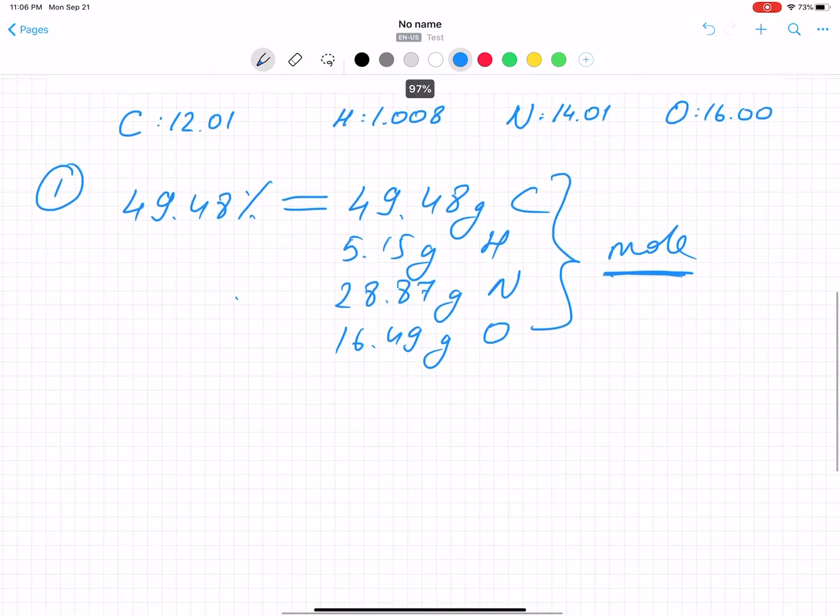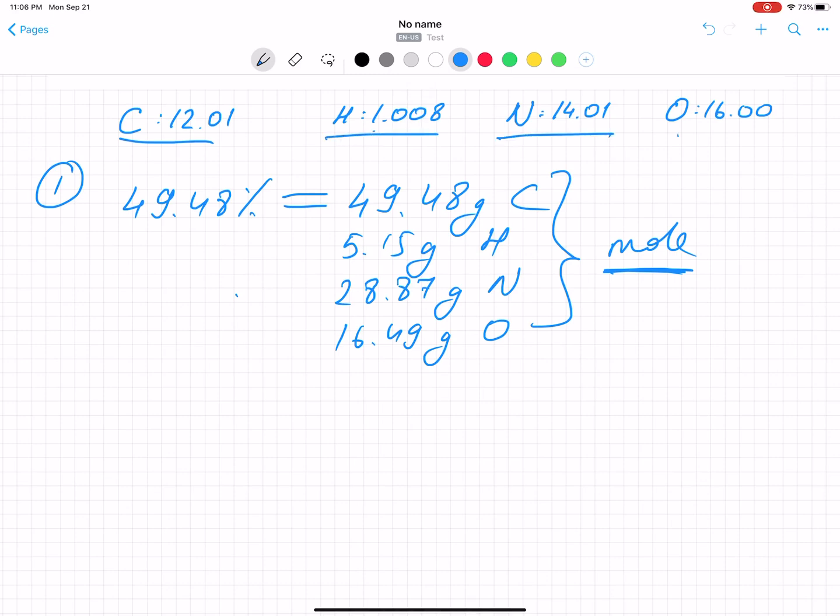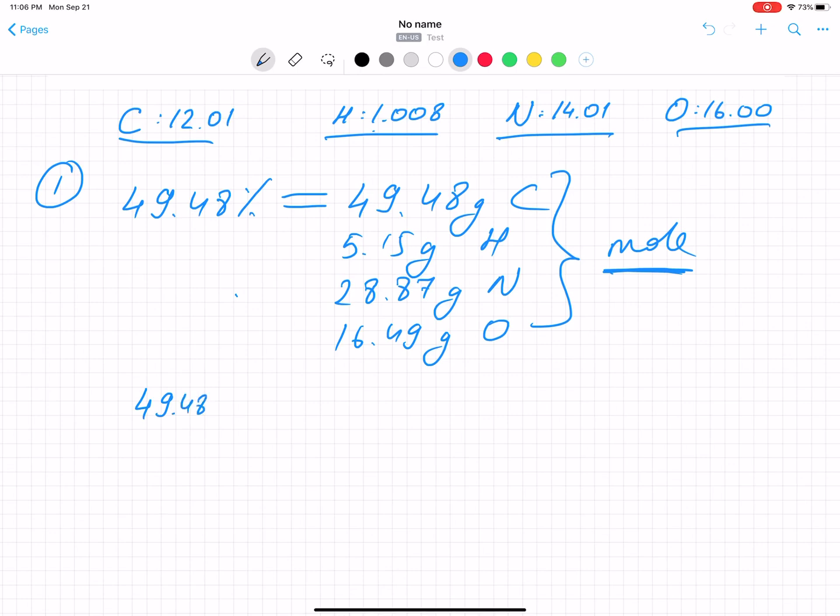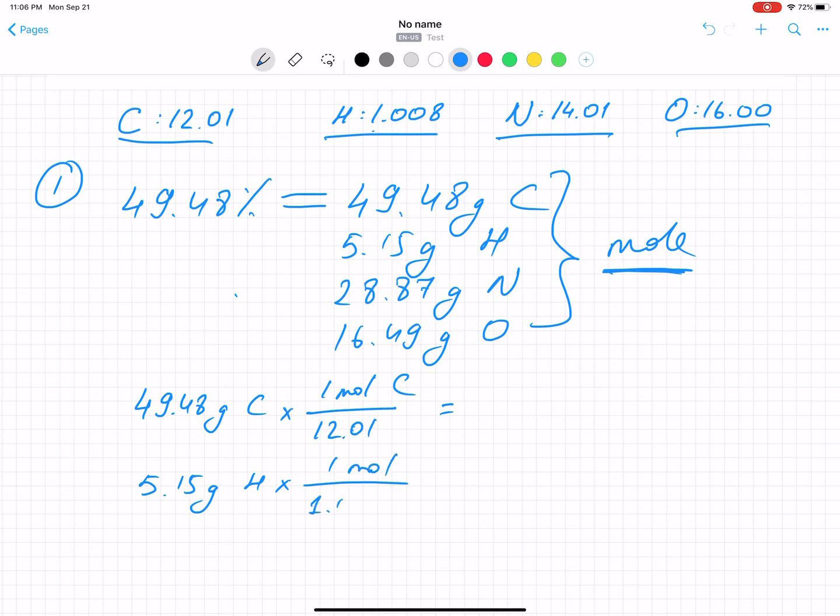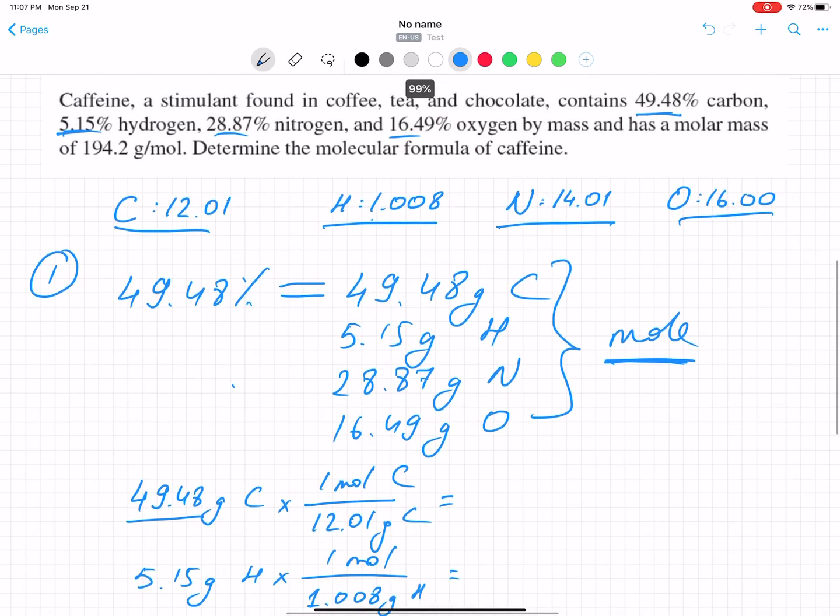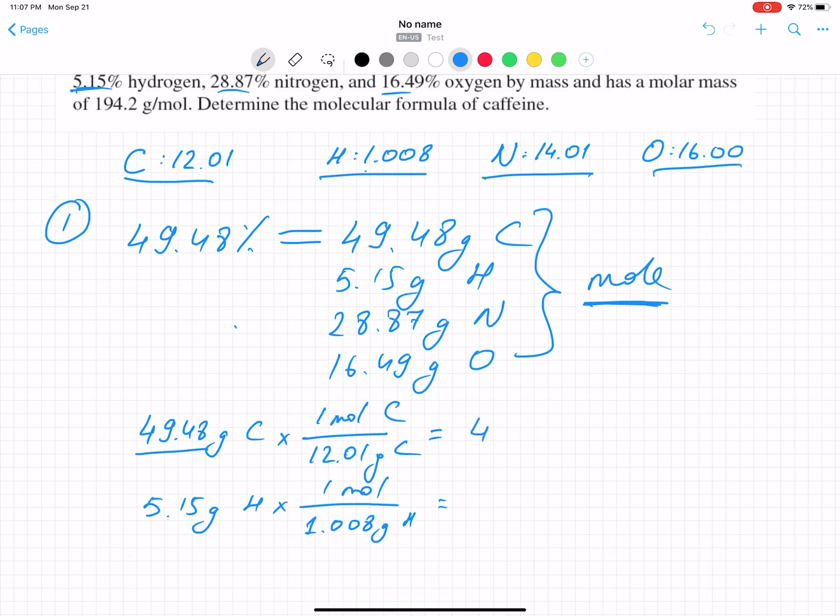In order to find the mole of those, you need a periodic table. You will find the atomic masses of elements and find the moles. Let's dive. 49.48 grams of carbon, when you will convert to moles, one mole of carbon is always 12.01. The hydrogen, 5.15 grams of hydrogen, you will convert to moles, and that will be 1.008 grams per mole. Let me solve those first.